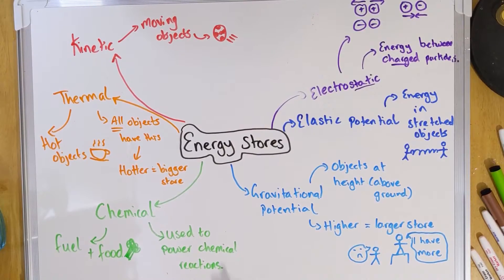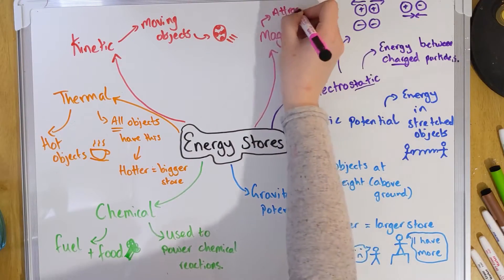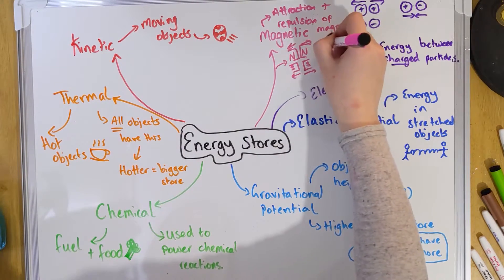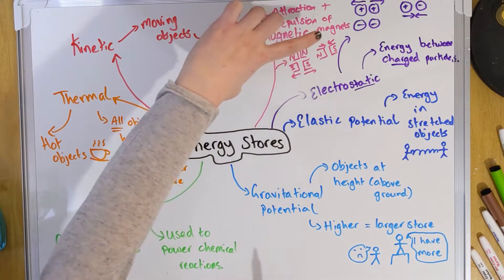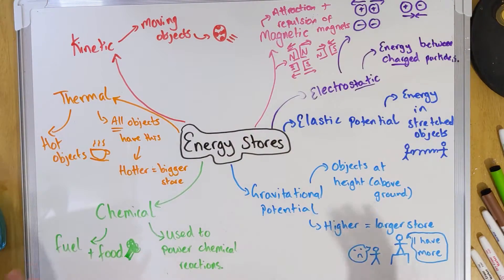Our next store is magnetic energy. Magnetic energy is very similar to electrostatic, but rather than talking about charged particles, we're talking about the attraction forces between poles — your north and your south pole. Two norths or two souths together repel, and if you've got a north and a south they come together and attract. So that's where the energy is — same poles push apart, opposite poles come together.